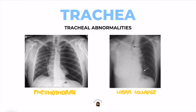Here are two cases of tracheal abnormalities. The x-ray on the left shows a pneumothorax, and you can clearly see the collapsed lung on the left side. In a pneumothorax, the trachea deviates to the unaffected side, which is the right side in this case. In cases of lobar collapse, as shown on the x-ray on the right, the trachea will deviate to the affected side, which is the right side in this case.